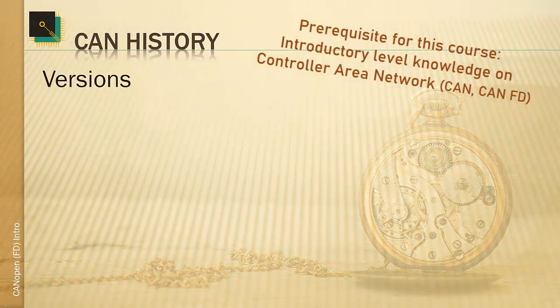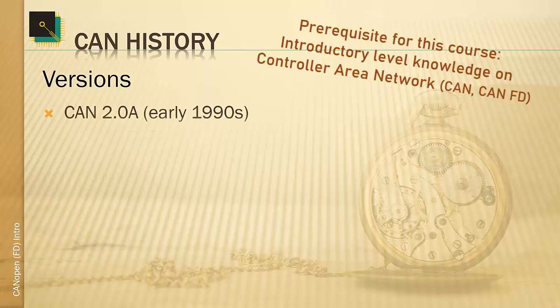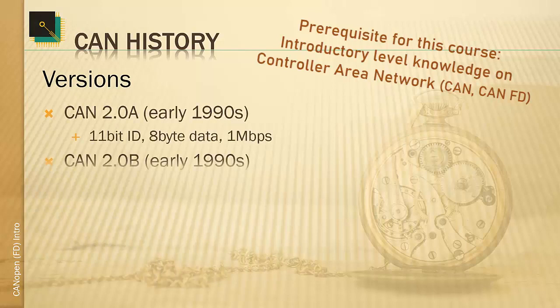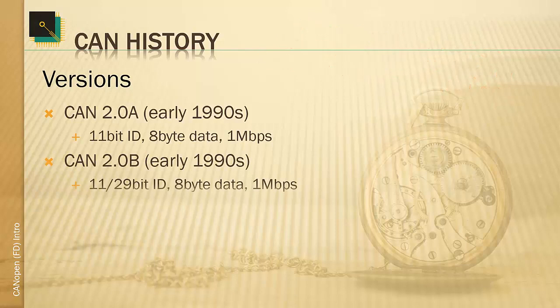The CAN version history began in the early 90s when CAN 2.0a and 2.0b were introduced. The only difference between the two was that the 11-bit CAN message identifier was extended to a 29-bit version. Today these are compatible with each other, and typically all CAN controllers support the CAN 2.0b version, so on the fly they can switch between 11 and 29-bit identifiers.